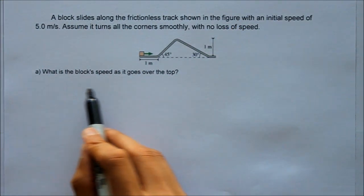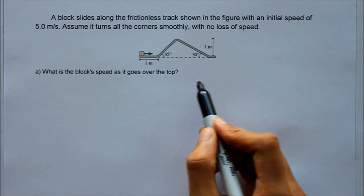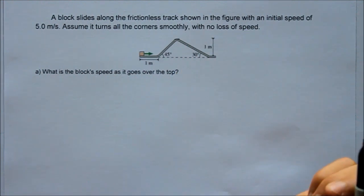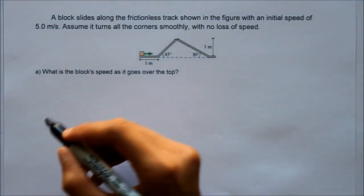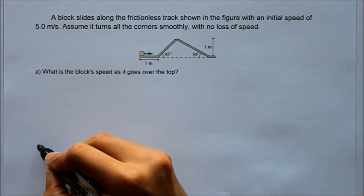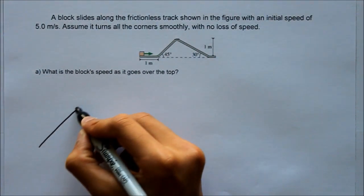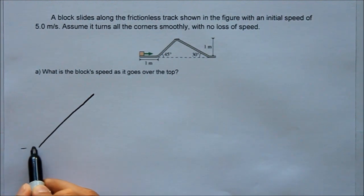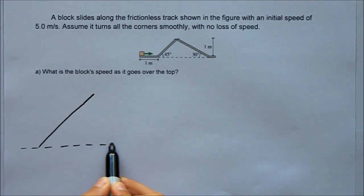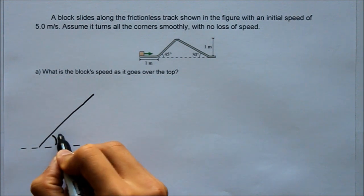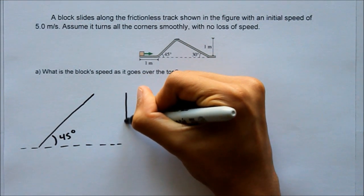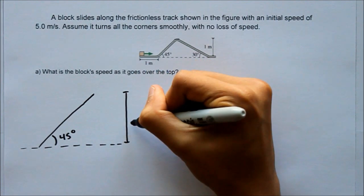All the question really asks for is what's the block speed as it goes over the top? So we want the velocity at that instant when it's up there. So the very first thing I like to do is sketch out a nice representation of what part of the track we're looking at. So I've got that steep incline of the track we're going to be looking at. And then this is the surface. And we know that this is 45 degrees. And we know that the height here is exactly 1 meter.